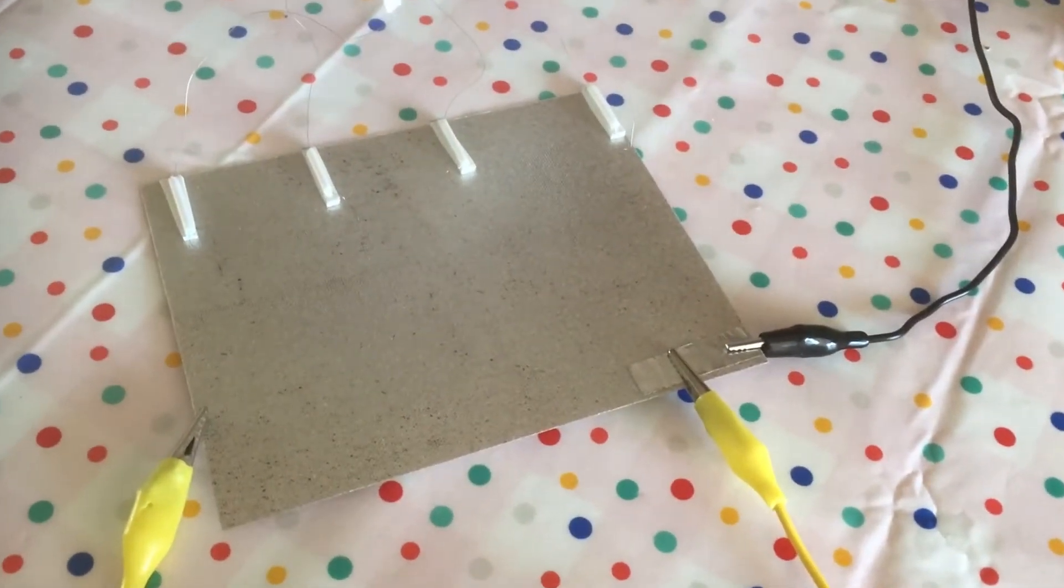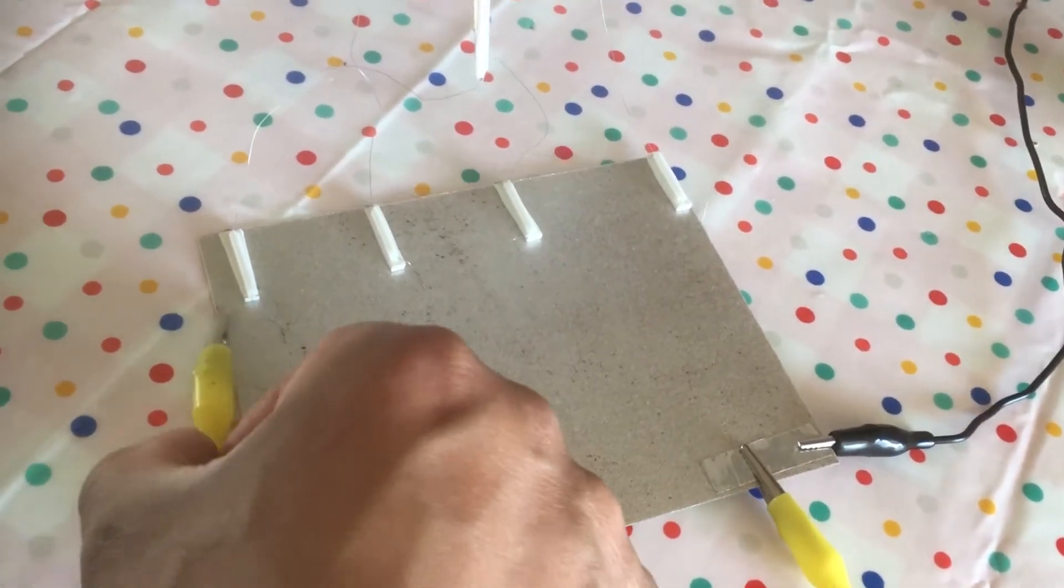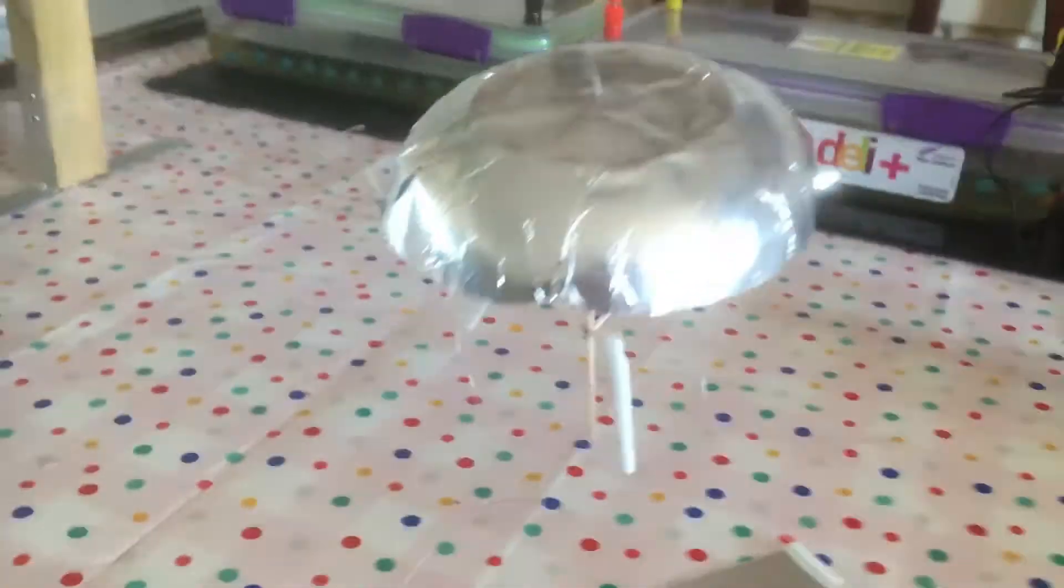So the mica sheet has a ground and I can basically set the direction of the saucer.